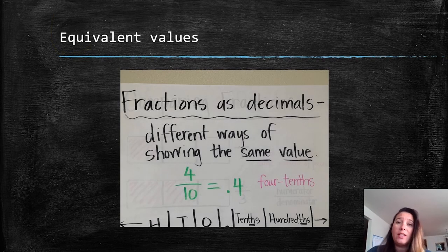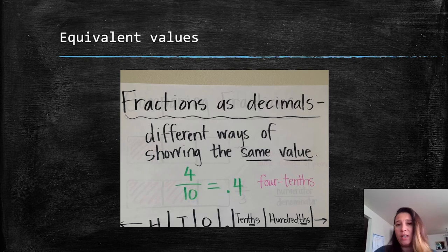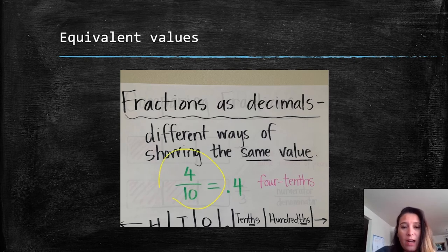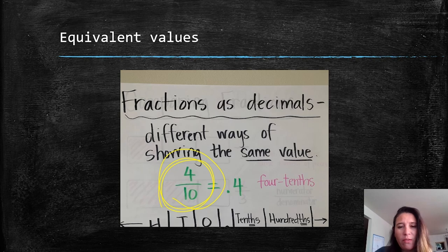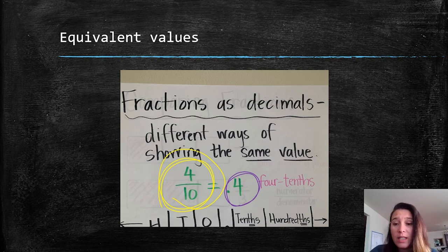When we're converting fractions to decimals and decimals to fractions, it's super important that we're always remembering that whatever we write on one side of the equation, it's going to have the same value as what's on the other side. When we're writing fractions as decimals or decimals as fractions, all we're doing is showing the same value in two different ways. If you look at the example on your screen, I have written four tenths as a fraction right here, and then I also wrote four tenths as a decimal right here.